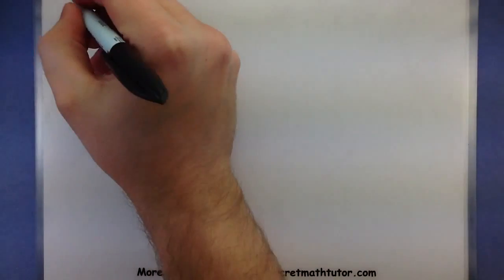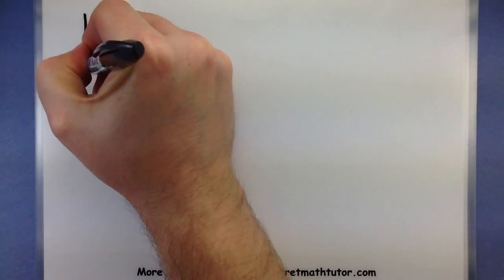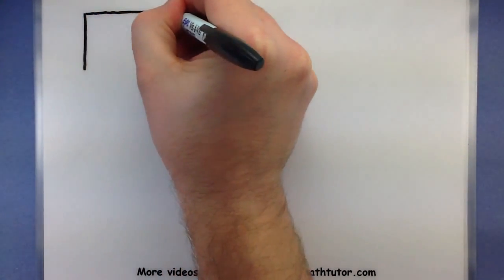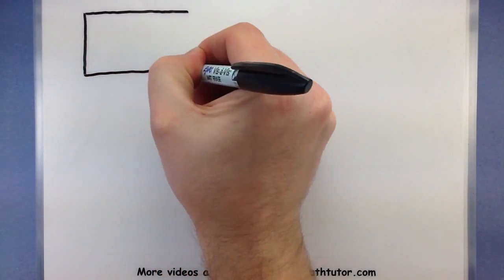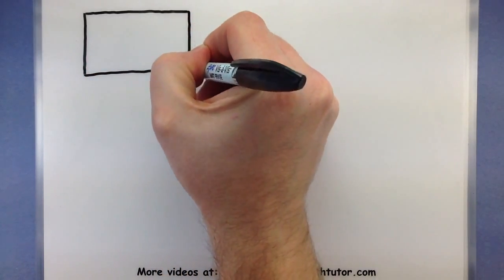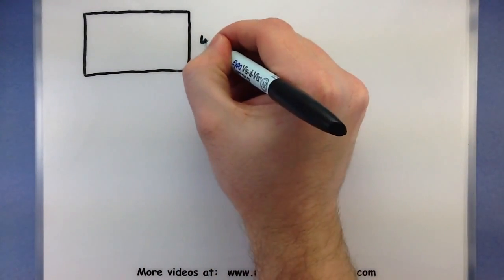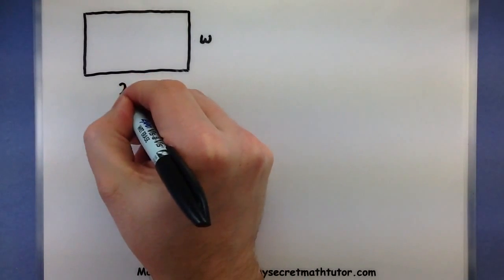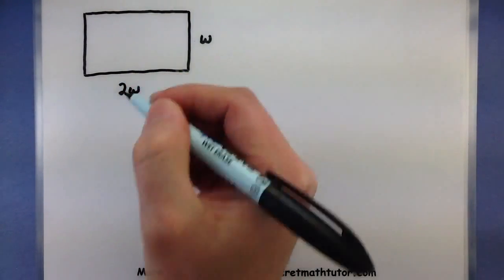So the very first thing that I want to do is actually just draw a diagram of the situation. That way I can start wrapping my mind around it. So according to the original problem I have this cardboard piece that I'll be cutting some corners out of. Now what I know about this cardboard piece is that it is exactly twice as long as it is wide. Let's go ahead and label the width W and since the length is twice as long we'll label the length 2W.